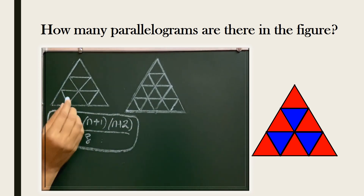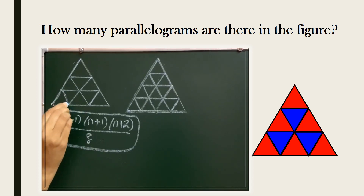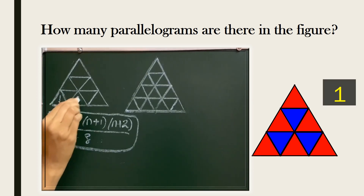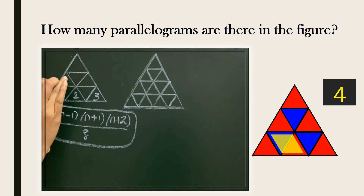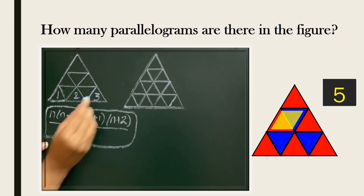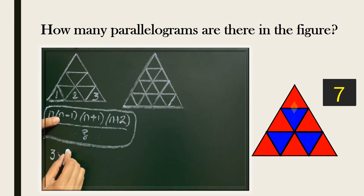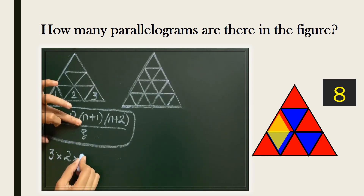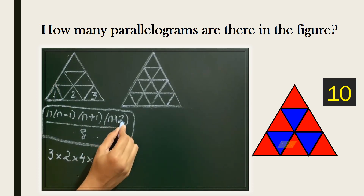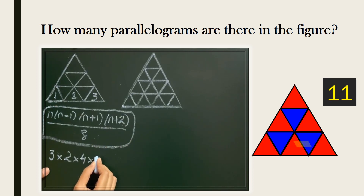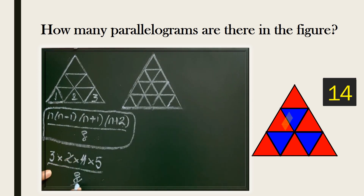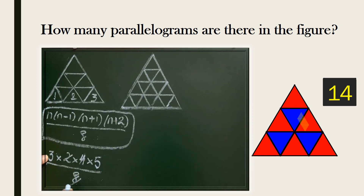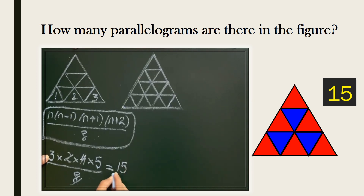In this triangular figure, n is the number of triangles at the base: 1, 2, 3 — so n is 3. Substituting: n=3, n−1=2, n+1=4, n+2=5. The 2 and 4 cancel with the 8, leaving 3 into 5 which is 15. So there are 15 parallelograms in this figure.